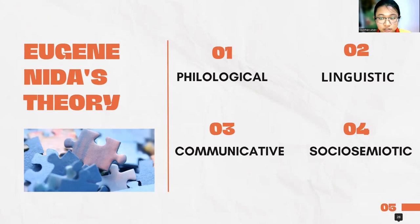As you can see on the screen, the four perspectives are: number one, philological; number two, linguistic; number three, communicative; and number four, sociosemiotic. These perspectives create a scientific and systematic methodology used in translation.